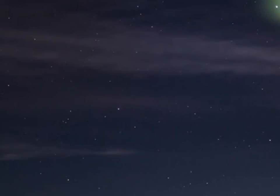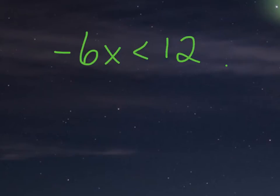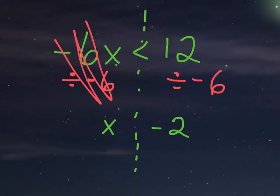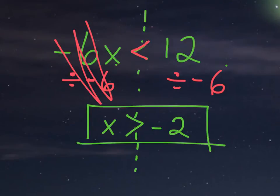Let's say we're trying to solve the inequality negative 6x is less than 12. So x is being multiplied by negative 6. To get x by itself, I'm going to divide by negative 6, because that's the opposite of multiplying. We divide both sides by negative 6, canceling those out, and we're left with x on the left side. On the right side, 12 divided by negative 6 gives us negative 2. Don't make the mistake of keeping the same symbol — since we divided by a negative number, we flip the sign. So instead of less than, it's greater than: x is greater than negative 2.